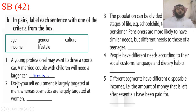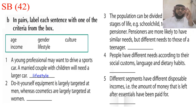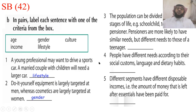Number two: Do-it-yourself equipment — معدات خاصة بأشياء تعملها بالمنزل بنفسك — is largely targeted at men. Whereas cosmetics — أدوات التجميل — are largely targeted at women. The answer is gender or sex — مذكر أو مؤنث.